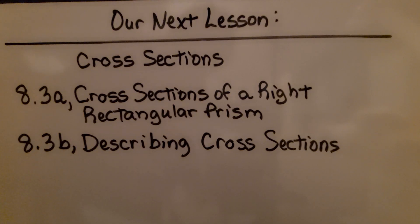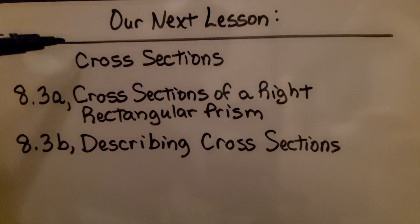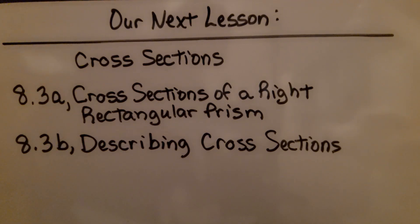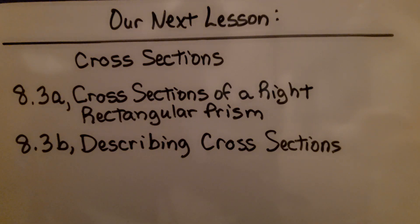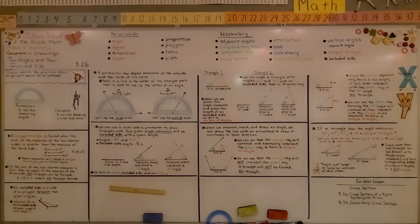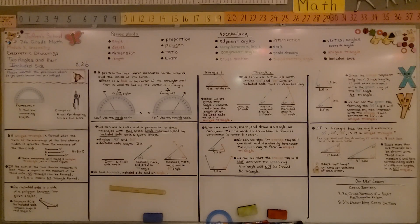We're finished with lesson 8.2 and moving on to 8.3, which is about cross sections. 8.3a is cross sections of a right rectangular prism. Remember, a unique triangle is formed when the sum of the measures of the two shorter sides is greater than the measure of the third side. Have a wonderful day, and join me for the next lesson. Bye!